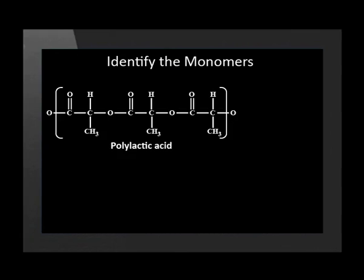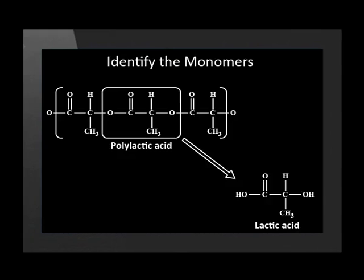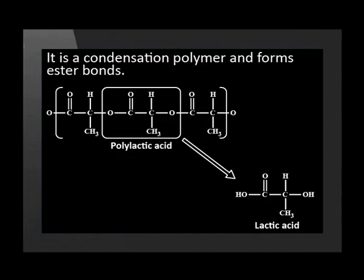You may also be asked to do this for condensation polymers. See if you can identify the monomers in this chain of molecules. This particular polymer is called polylactic acid and is actually environmentally friendly. Polylactic acid can be broken down into monomers by bacteria, fungi, and yeast in nature. It is also one of the plastics that can be made from materials like maize, and not from oil like the other plastics. As you can see, this is a condensation polymer and forms ester bonds.